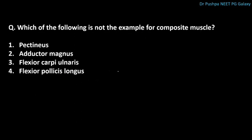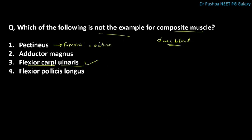Which of the following is not an example of a composite muscle? The correct answer is flexor carpi ulnaris. Muscles with dual blood supply are called composite muscles, also known as hybrid muscles. Pectineus is supplied by the femoral nerve and obturator nerve. Adductor magnus is supplied by the obturator nerve and the tibial part of the sciatic nerve. Flexor pollicis longus is supplied by branches of the median and ulnar nerve.